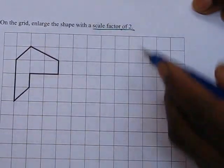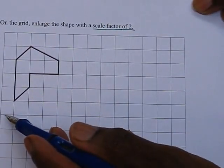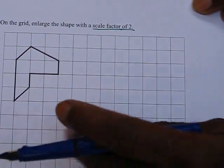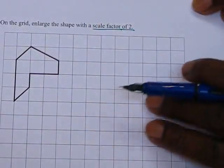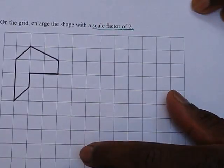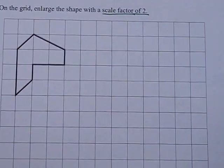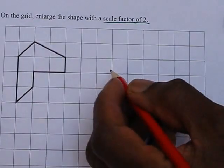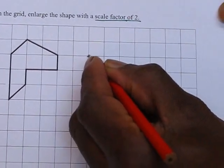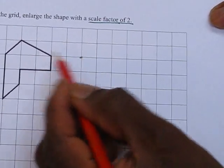Notice on the grid here there is no centre of enlargement so the position can go more or less anywhere on this grid. What I'm going to do is start off with a point here. Now this point will correspond to this point.